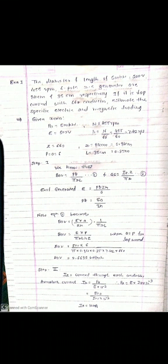So let's start the first problem. The first problem states: the diameter and length of a 500 kilowatt, 500 volt, 455 RPM, 6-pole DC generator are 84 cm and 35 cm respectively. If it is lap wound with 660 conductors, estimate the specific electric and magnetic loading.